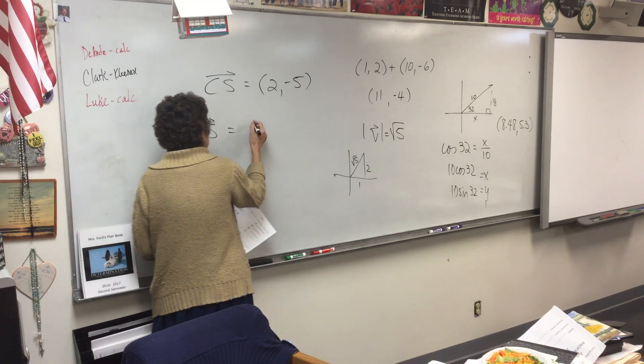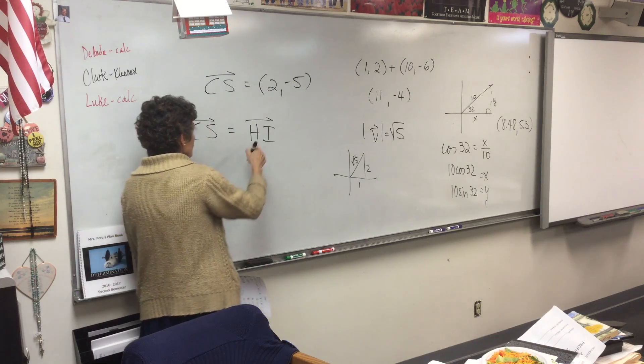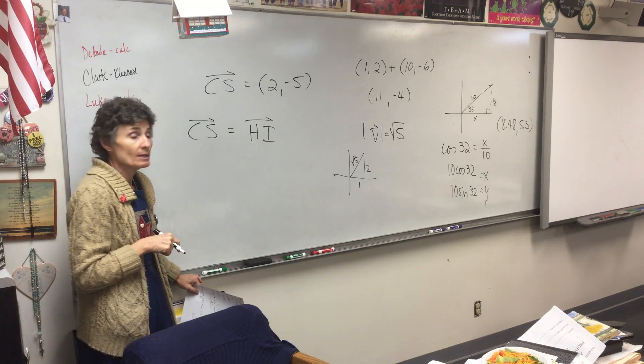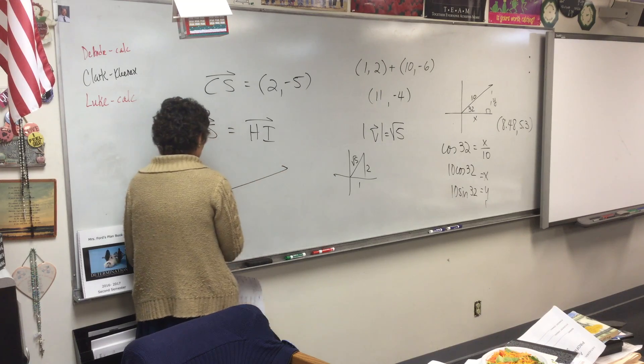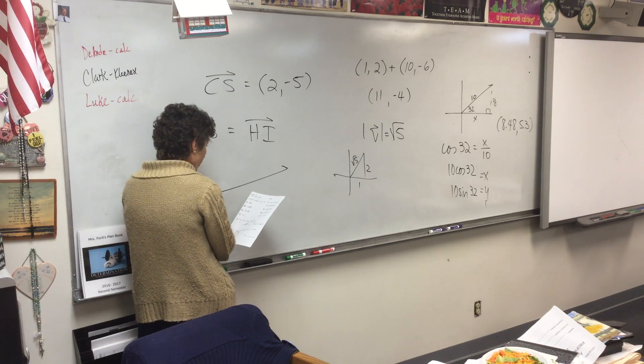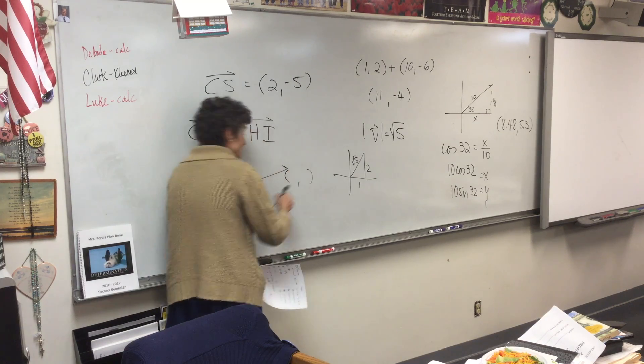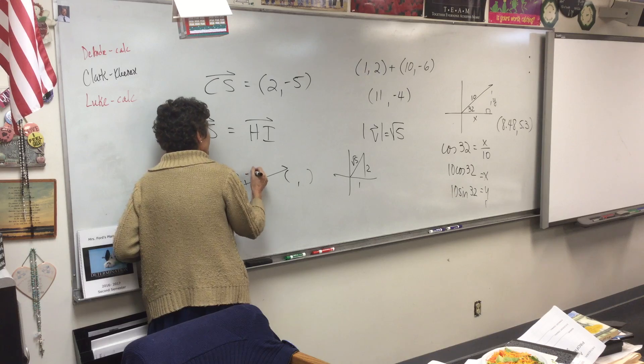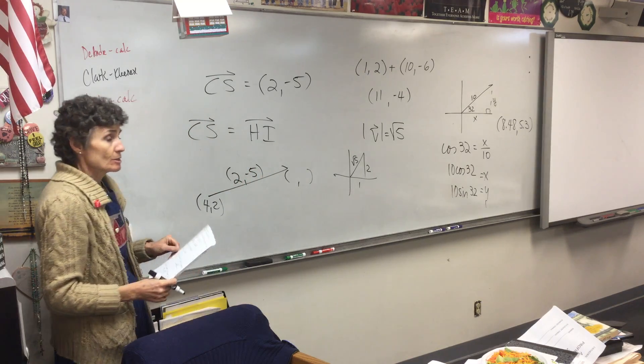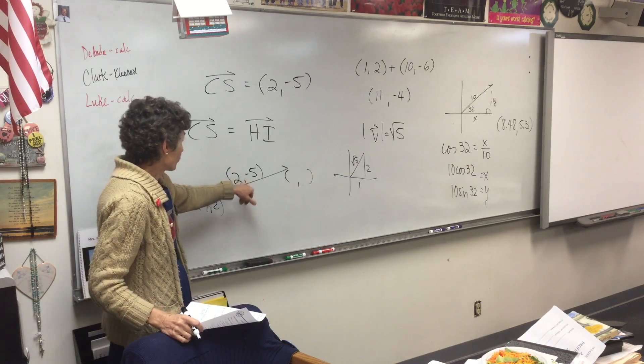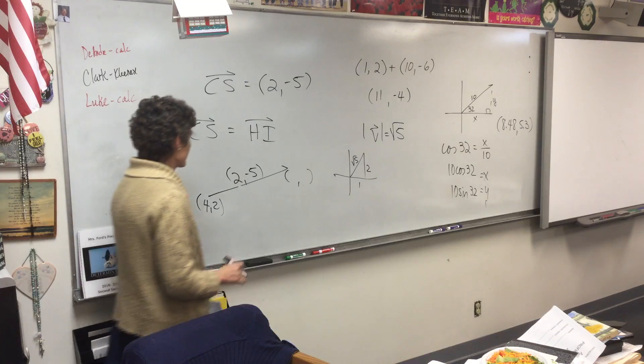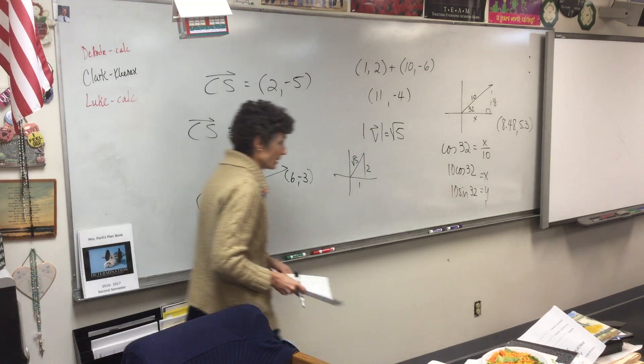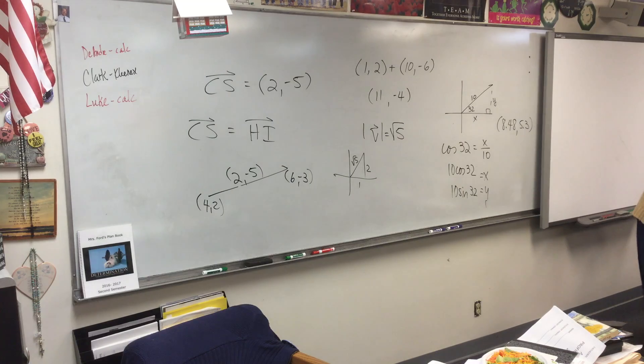We want CS to be the same as HI. In other words, we want the point HI to also move right two and down five. But it is starting at the point H, which is four, two. And I have no idea where it's stopping, but I know that it is moving right two and down five. So if you start here, go right two and down five. Where are you going to end up? Six negative three. So the answer is six negative three. All right. So that's done.